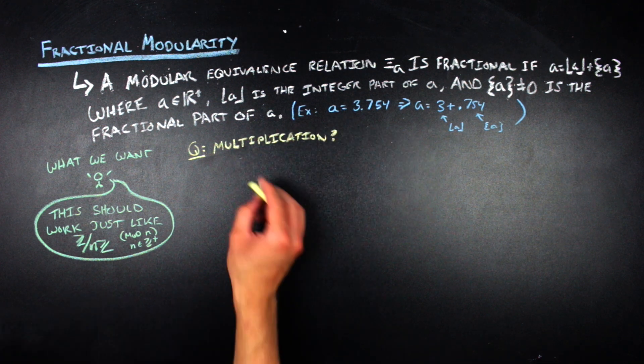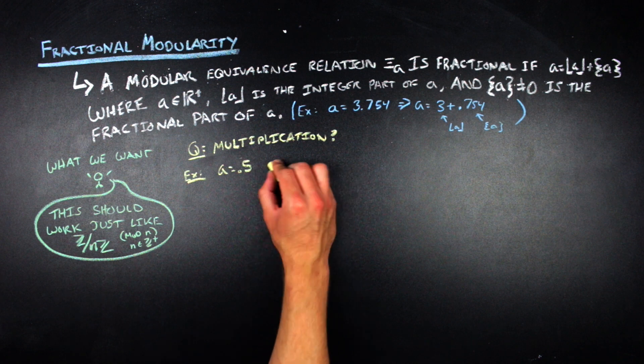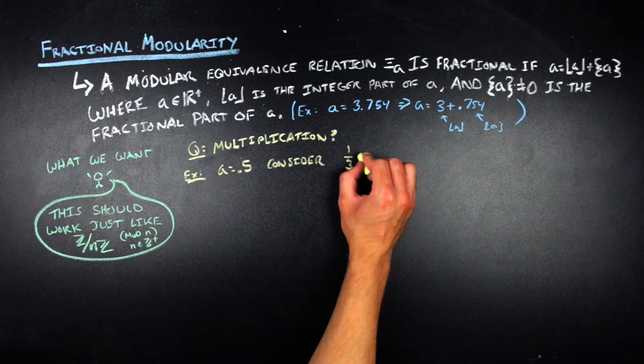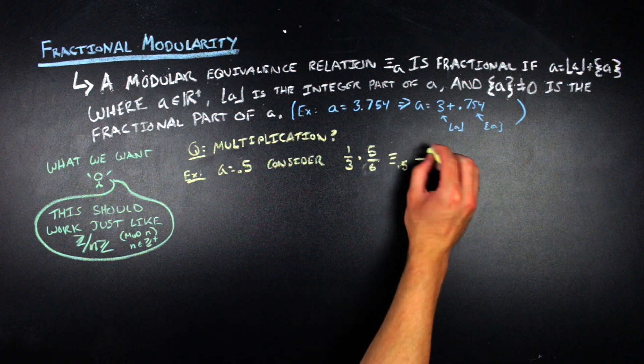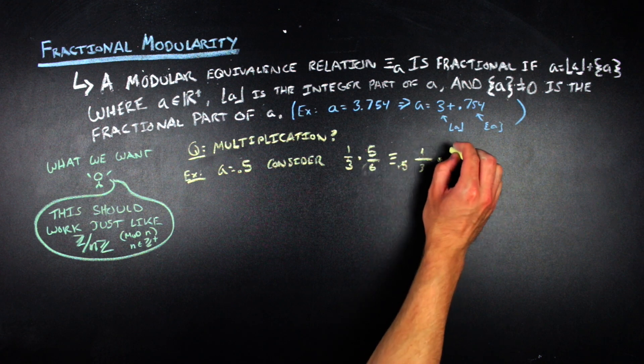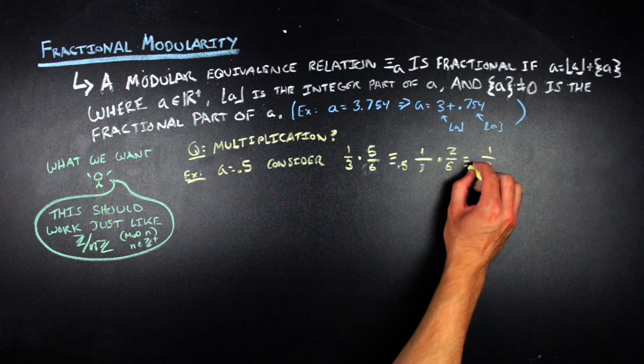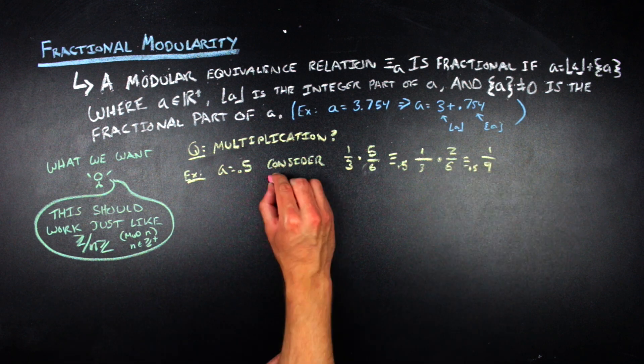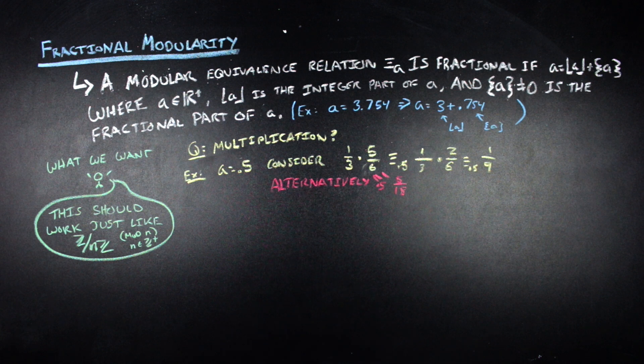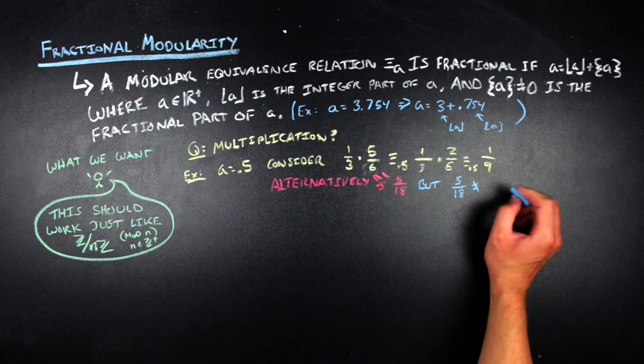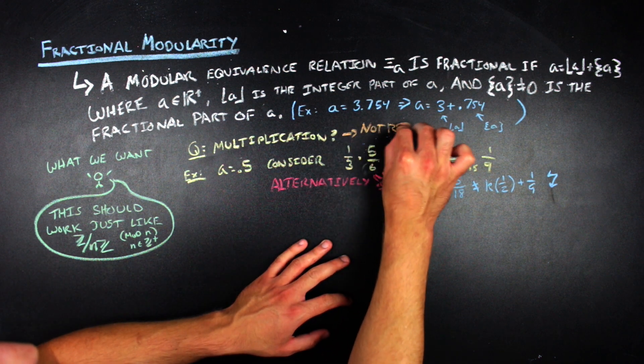So, for multiplication, for instance, we can look at the case where our fractional equivalence relation is defined by a half. Let's take a concrete example instead of being super general in this case and just do like one third times five sixths. And so, if we assume all of the niceness that might come from integer modulo arithmetic, we might be able to then reduce five sixths to two sixths or one third. And then take that product and get one ninth. However, if we do the modular reduction in the other order, we get five eighteenths as the product of those two numbers. But you can't write five eighteenths or one ninth for that matter as an integer multiple of one half plus the other. And so, we're in a situation where multiplication doesn't really work out.